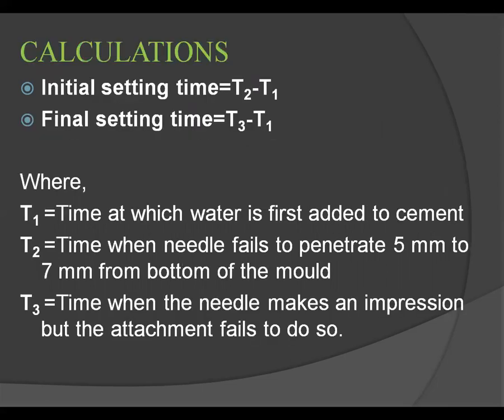For calculations: the initial setting time is found by the formula T2 minus T1, and the final setting time is found by the formula T3 minus T1. T1 is the time at which water is first added to cement, T2 is the time when the needle fails to penetrate 5 mm to 7 mm from the bottom of the mould, and T3 is the time when the needle makes an impression but the attachment fails to do so.